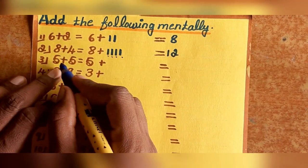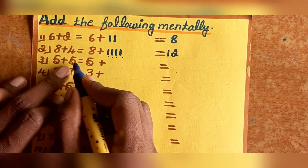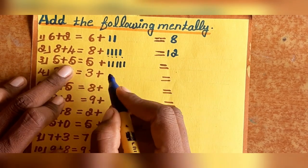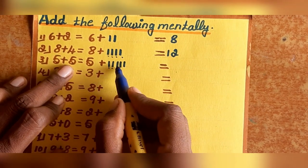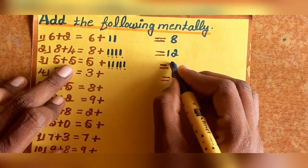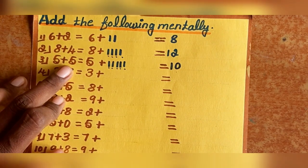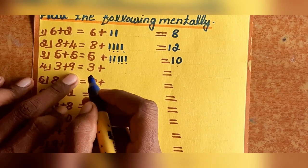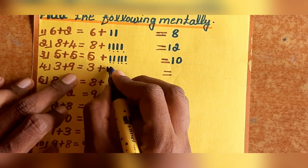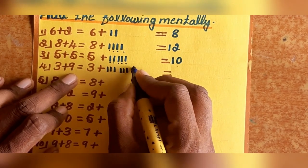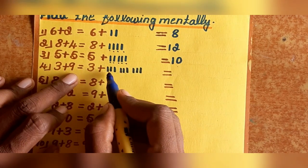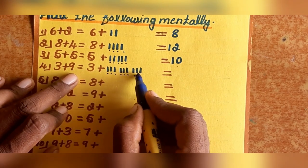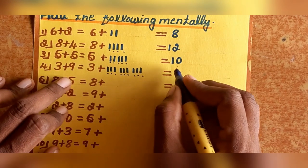Example 5: 3 plus 9. Tally 9 lines. Count from 3: 4, 5, 6, 7, 8, 9, 10, 11, 12. So 3 plus 9 equals 12.